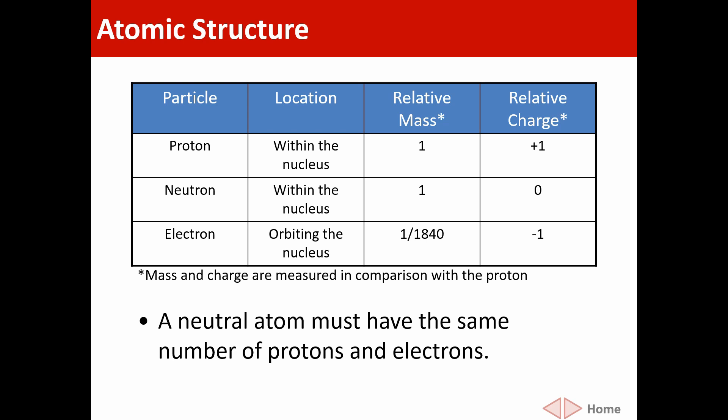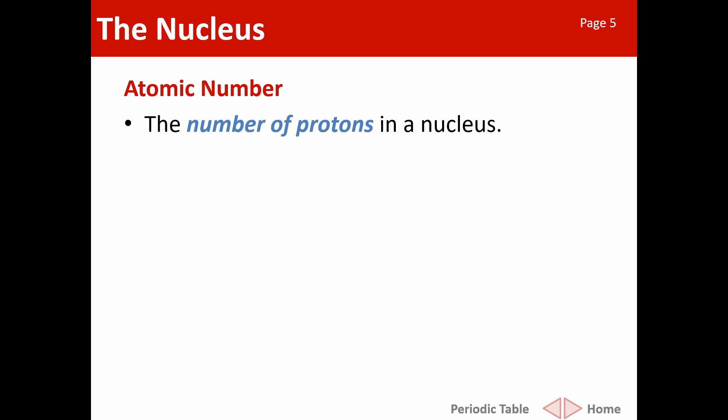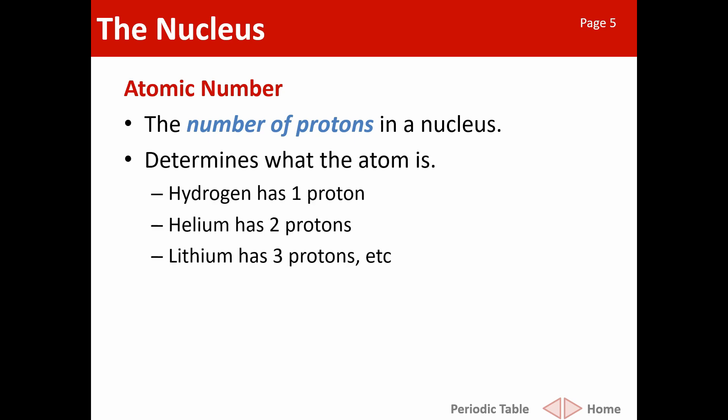The atomic number describes any particular atom or element, and the periodic table is sorted by atomic number. The atomic number is the number of protons in a nucleus, and it defines the chemistry of any particular atom. So hydrogen has one proton, helium has two, lithium has three, and so on — every single element has a different number of protons. We call that the atomic number and give it the symbol Z, which is a bit counterintuitive.